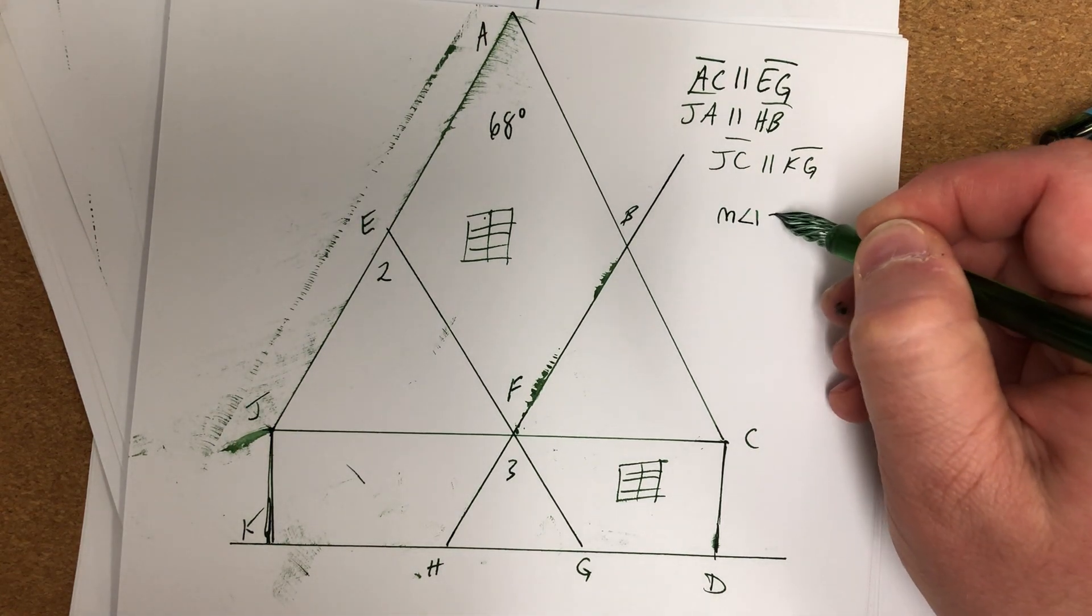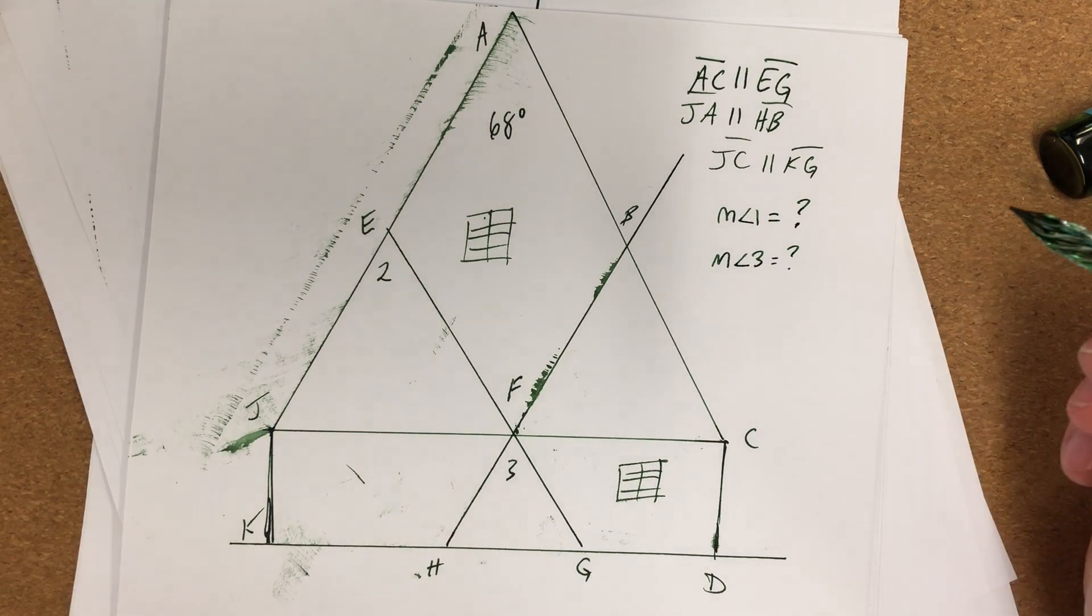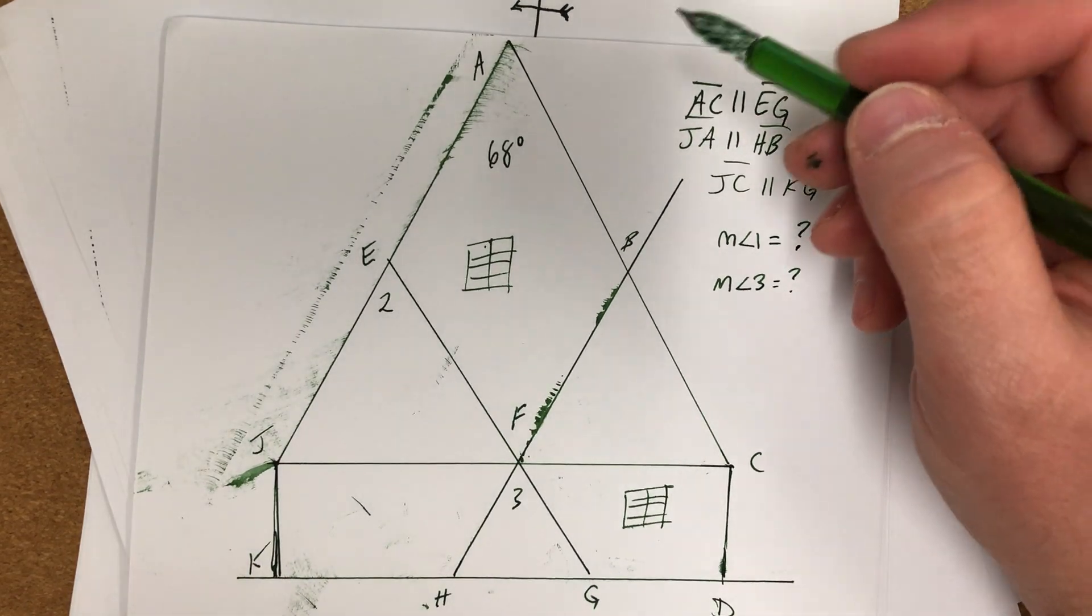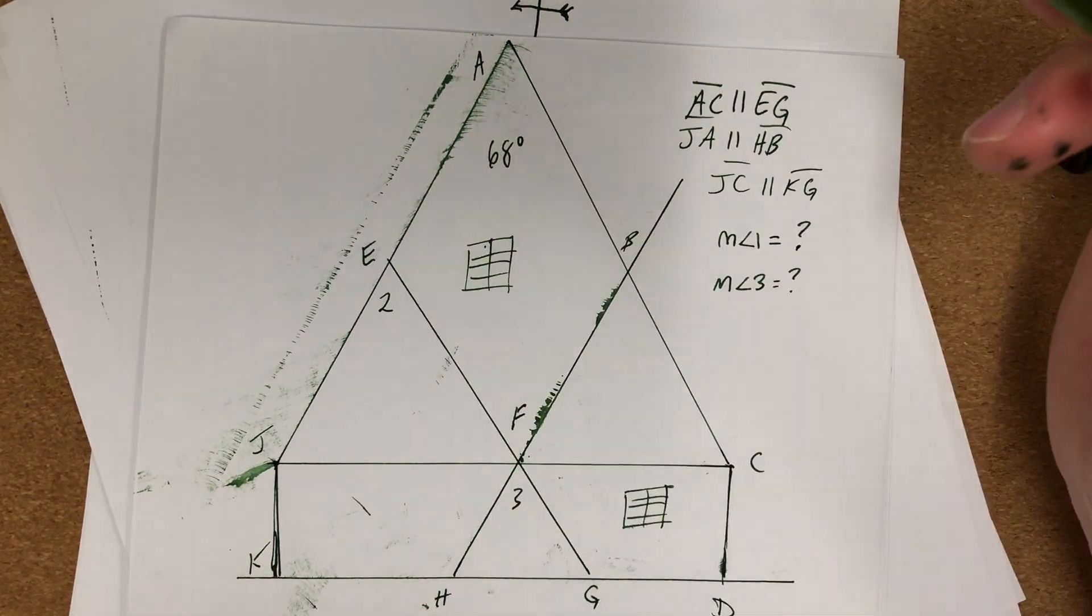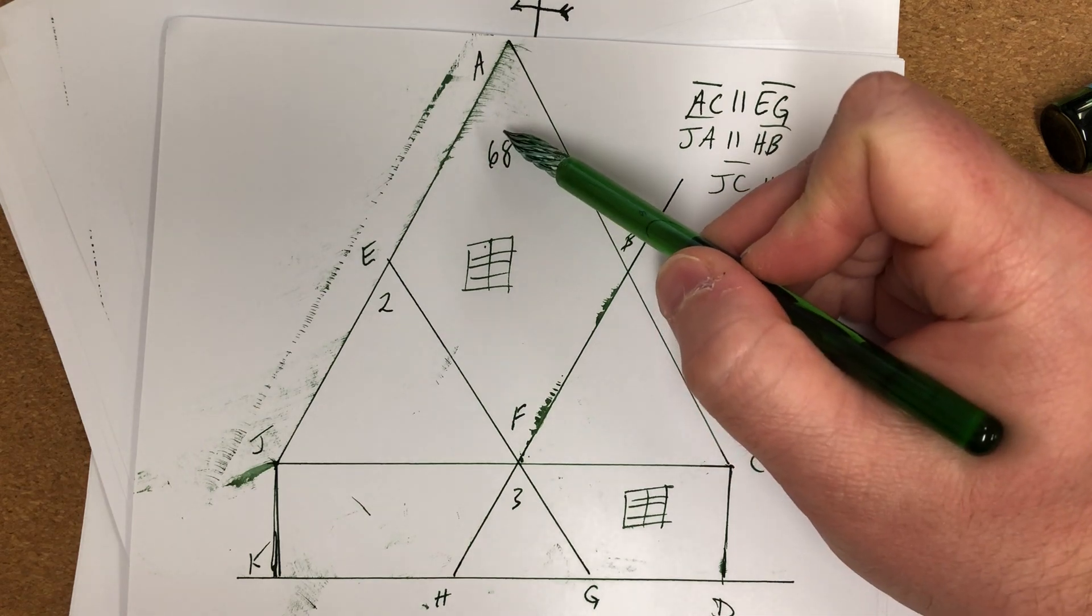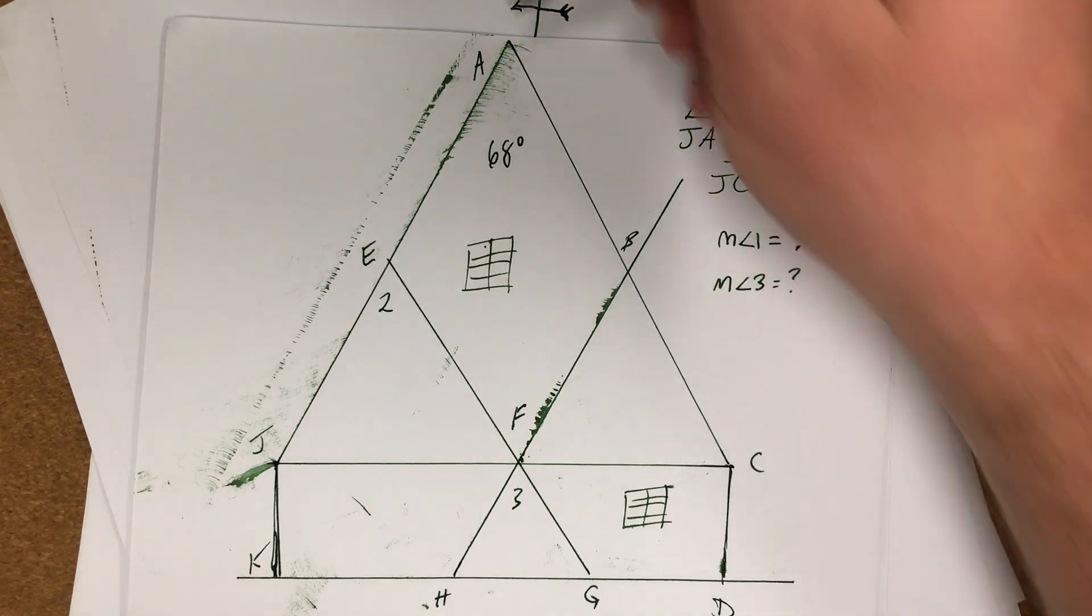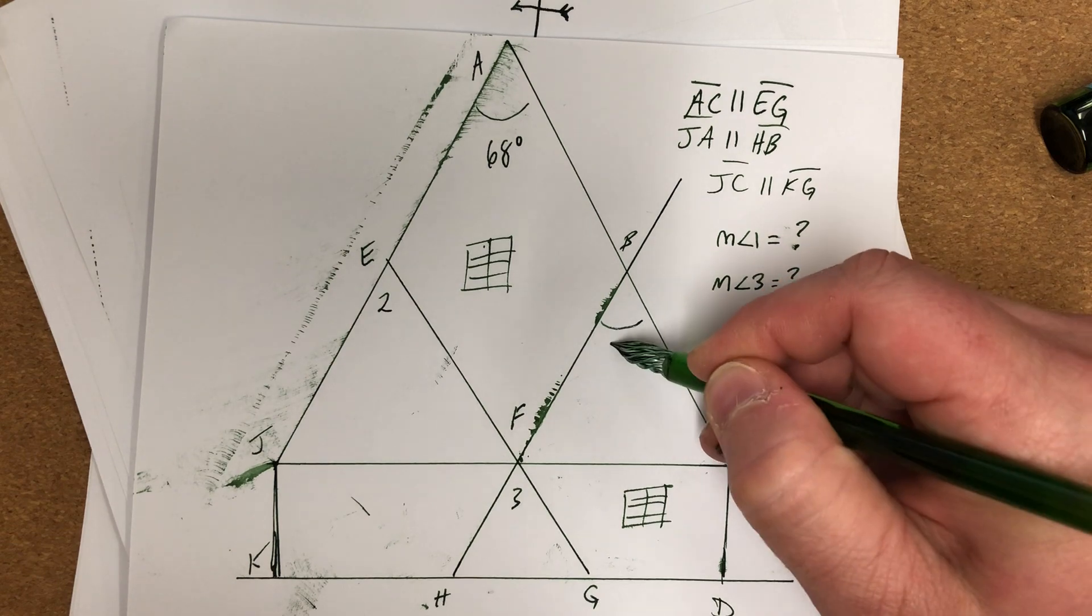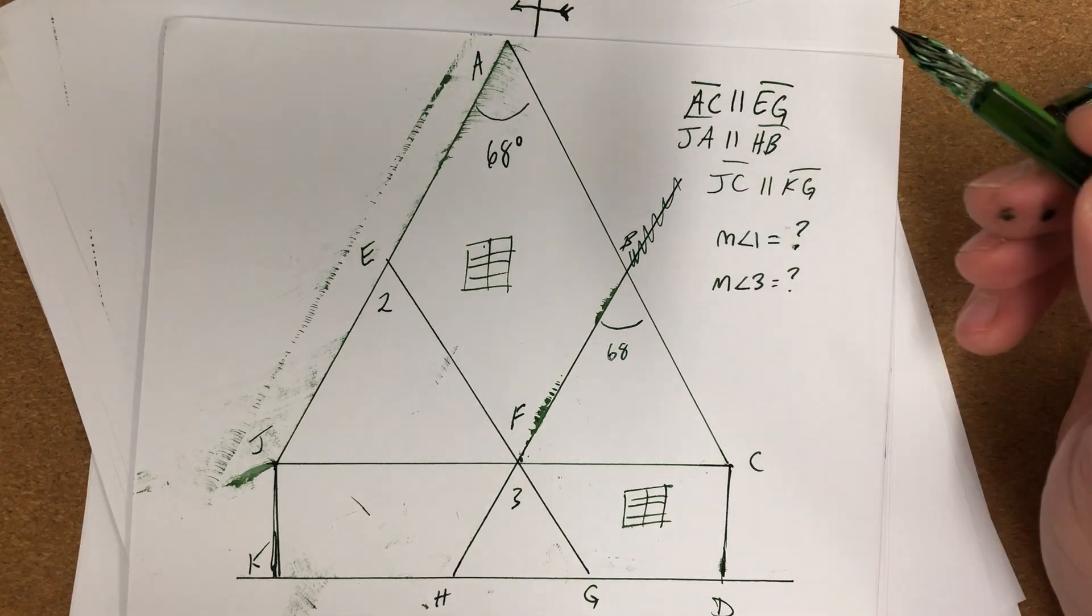Measure of angle one is equal to question mark, measure of angle three is equal to question mark. All right, so it's just a little puzzle. So let's see, well I know I've got two parallel lines here, right? And I see 68, so two parallel lines. Then I could count this as being a transversal. That means that if this one's 68, well then this one's also 68.